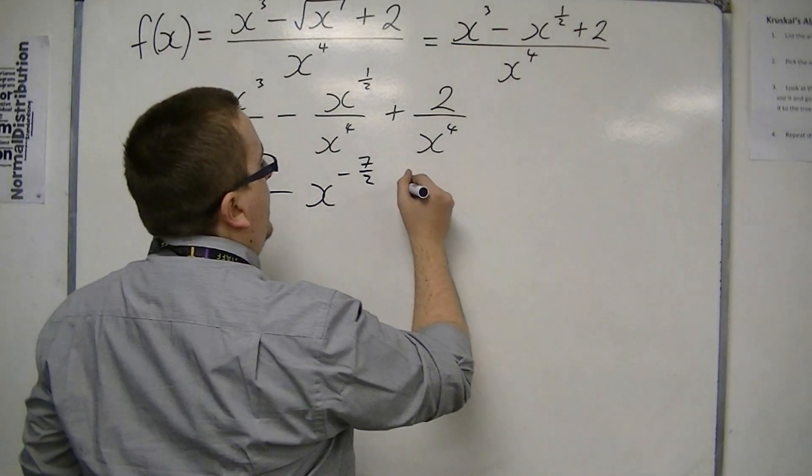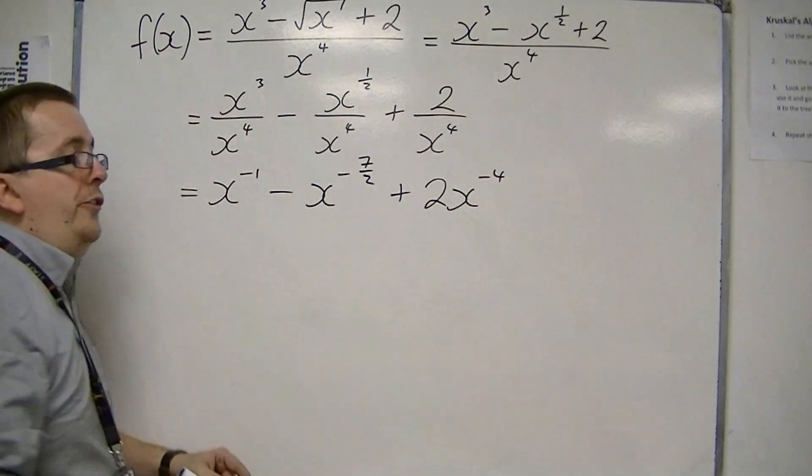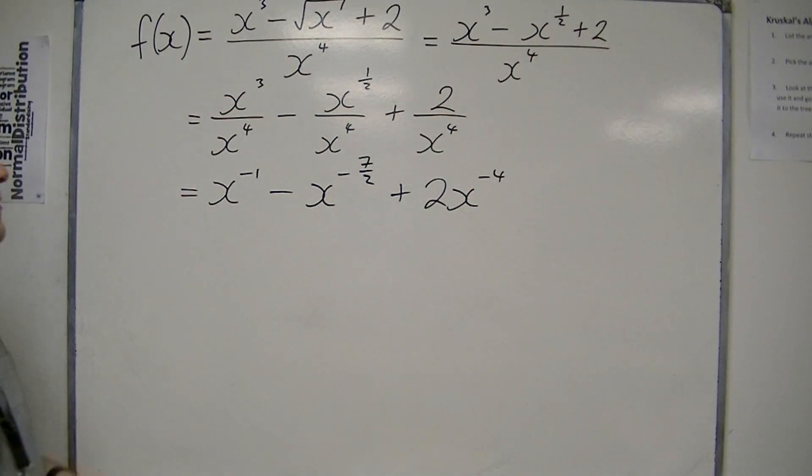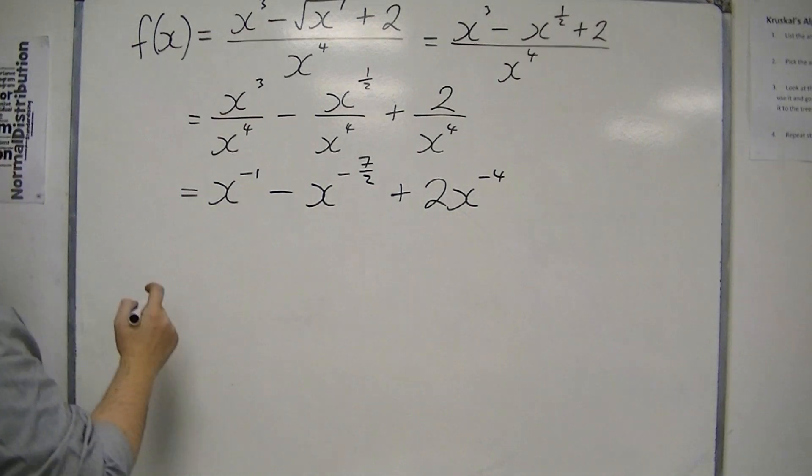And then I have 2x to the minus 4. This is 2 lots of 1 over x to the 4. Now I can differentiate it, because now I have it as a sum of powers of x.